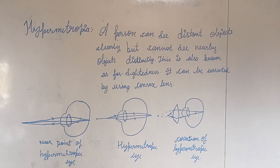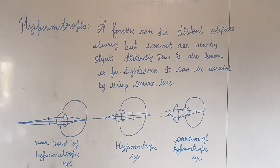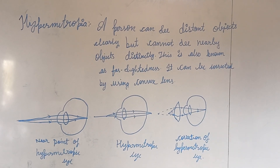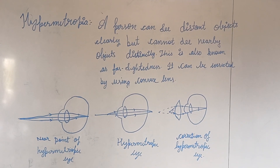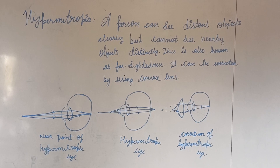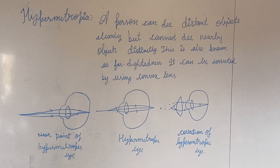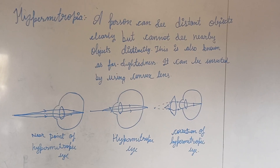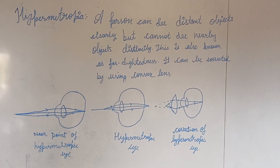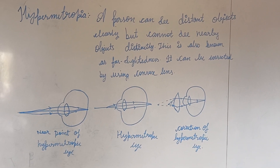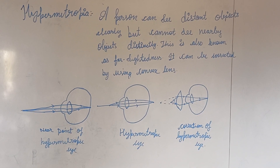Hypermetropia. A person can see distant objects clearly but cannot see nearby objects distinctly. This is also known as far-sightedness. It can be corrected by using a convex lens.